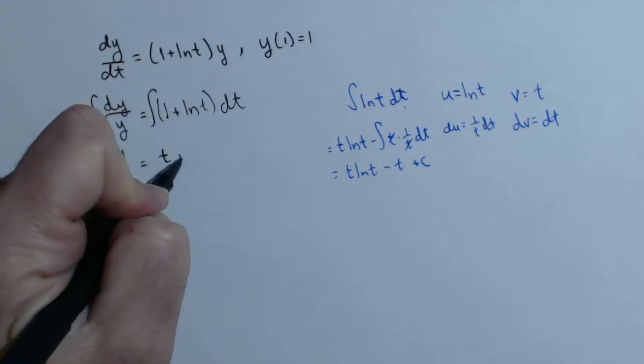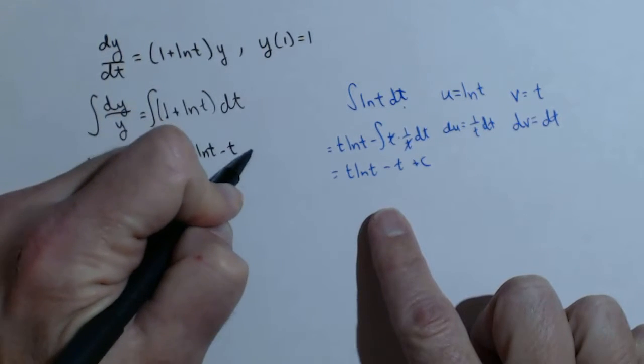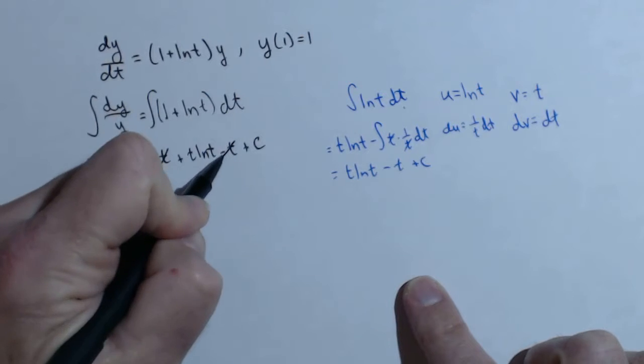So we had the t from this 1. Now we're going to have this guy here. So t ln of t minus t plus c. We can see that these t's are going to cancel.